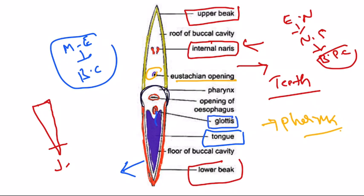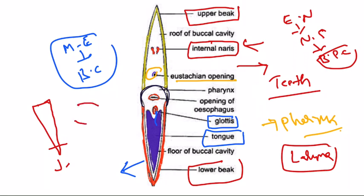The glottis is present behind the tongue. This glottis, studied in the respiratory system, helps open the pharynx into the larynx. It is a slit-like aperture that helps open the pharynx into the next part of the respiratory system, the larynx. Posteriorly, the wide pharynx becomes narrower to form the esophagus. At the posterior part of the pharynx there is an aperture called the gullet, which helps open the buccal cavity into the esophagus region.